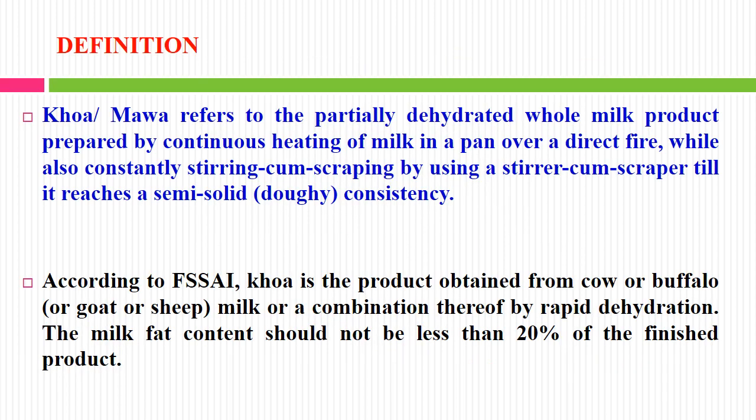First let us see the definition of Khoa. Khoa or Moa refers to the partially dehydrated whole milk product prepared by continuous heating of milk in a pan over a direct fire, while also constantly stirring and scrapping by using a stirrer or scrapper till it reaches a semi-solid or doughy consistency.